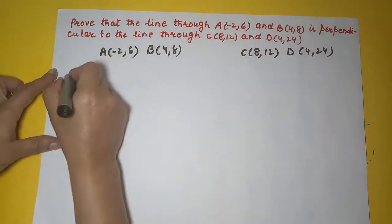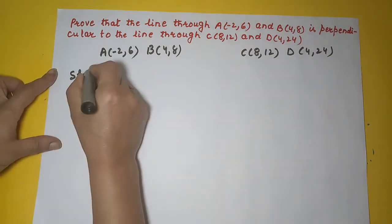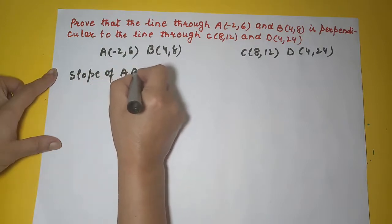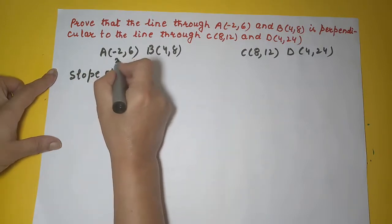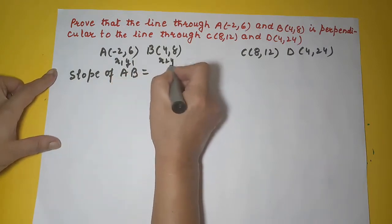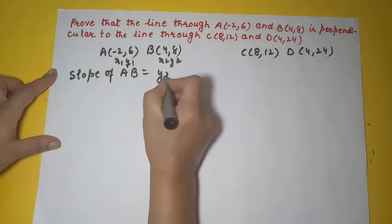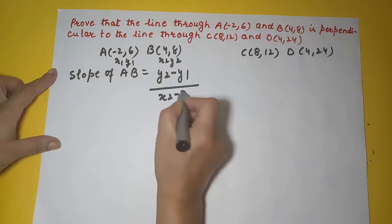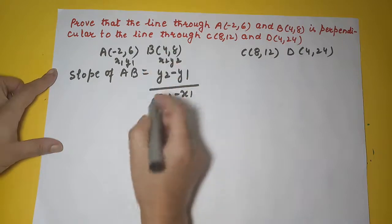So let's find the slope of AB. When two points are given, how do we calculate the slope? This is x2, y2. We calculate the slope as y2 minus y1 upon x2 minus x1. So we have all the values. Let's substitute.